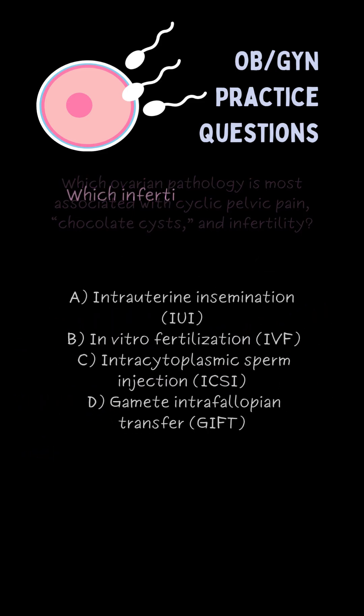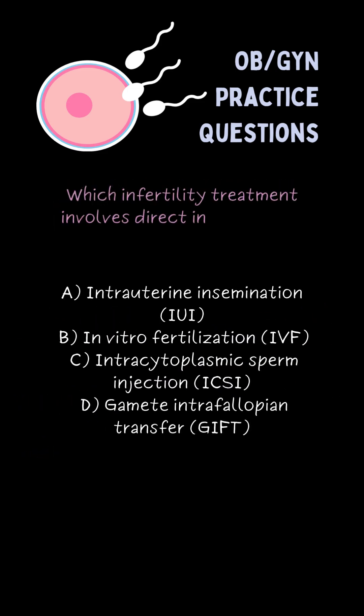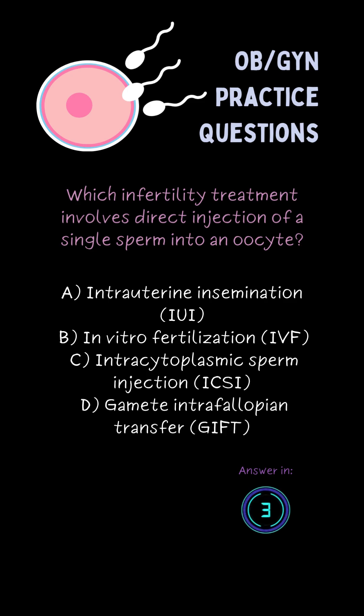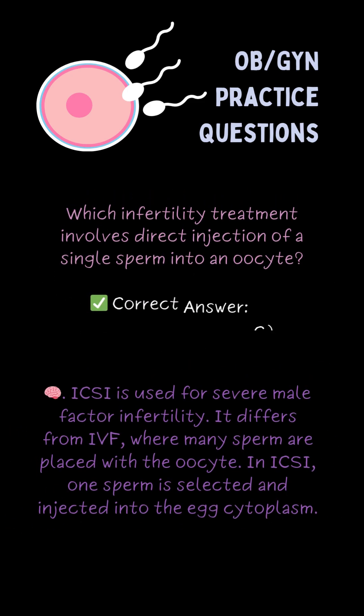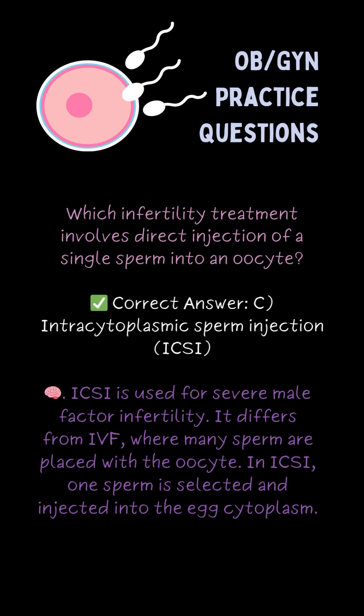Which infertility treatment involves direct injection of a single sperm into an oocyte? C. Intracytoplasmic sperm injection.